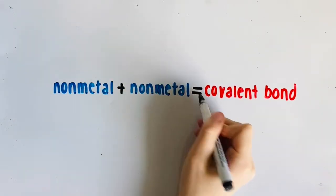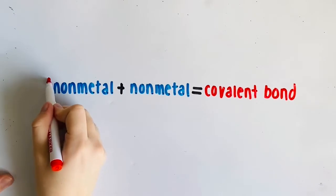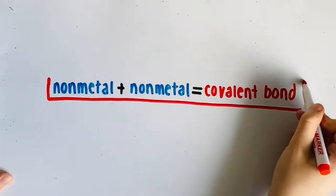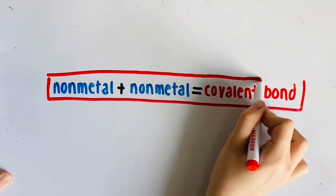In these compounds, the atoms of the elements share one or more electrons between them. Unlike ionic compounds, there is no transfer of electrons. This forms a covalent bond.